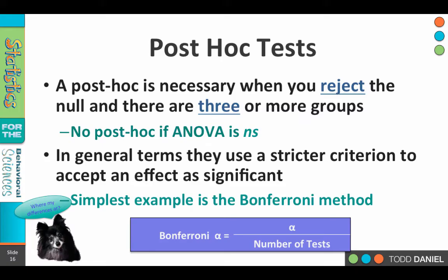The post hoc is only necessary when you reject the null hypothesis — when you say there is a statistically significant difference between groups — and when there are three or more groups. If there are only two groups, the solution is easy. But in the case of ANOVA, we could have three means: is the first one different than the second, or different than the third, or is the third just different from the first? We have to follow up in a way to determine where those differences lie.